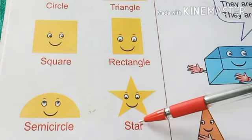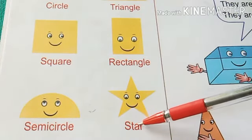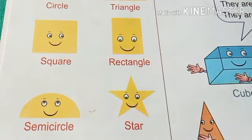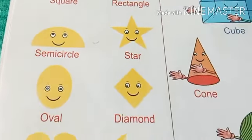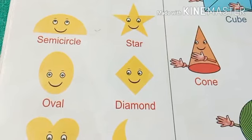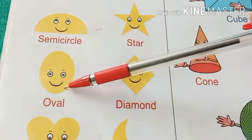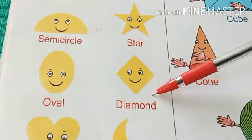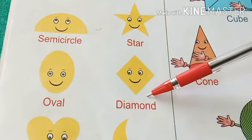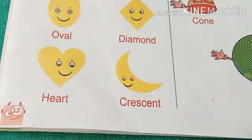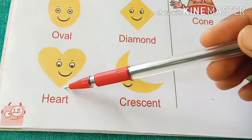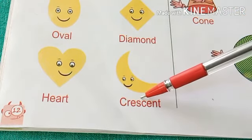And this is a star. This is an oval. And this is a diamond. This is a heart. And this is a crescent.